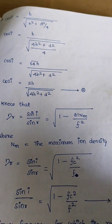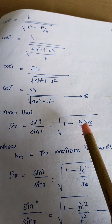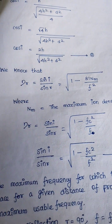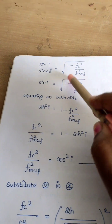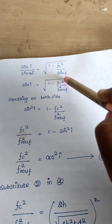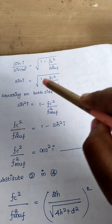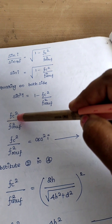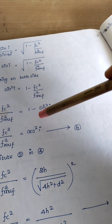Now apply Snell's law. The refractive index formula is sin(i) / sin(R) = square root of (1 minus 81N/F squared). For reflection, R equals 90 degrees and F equals the maximum usable frequency. So sin(i) / sin(90°) = square root of (1 minus Fc squared / Fmuf squared). Since sin(90°) = 1, sin(i) = square root of (1 minus Fc squared / Fmuf squared). Squaring both sides: sin²(i) = 1 minus Fc²/Fmuf², so Fc²/Fmuf² = 1 minus sin²(i) = cos²(i).